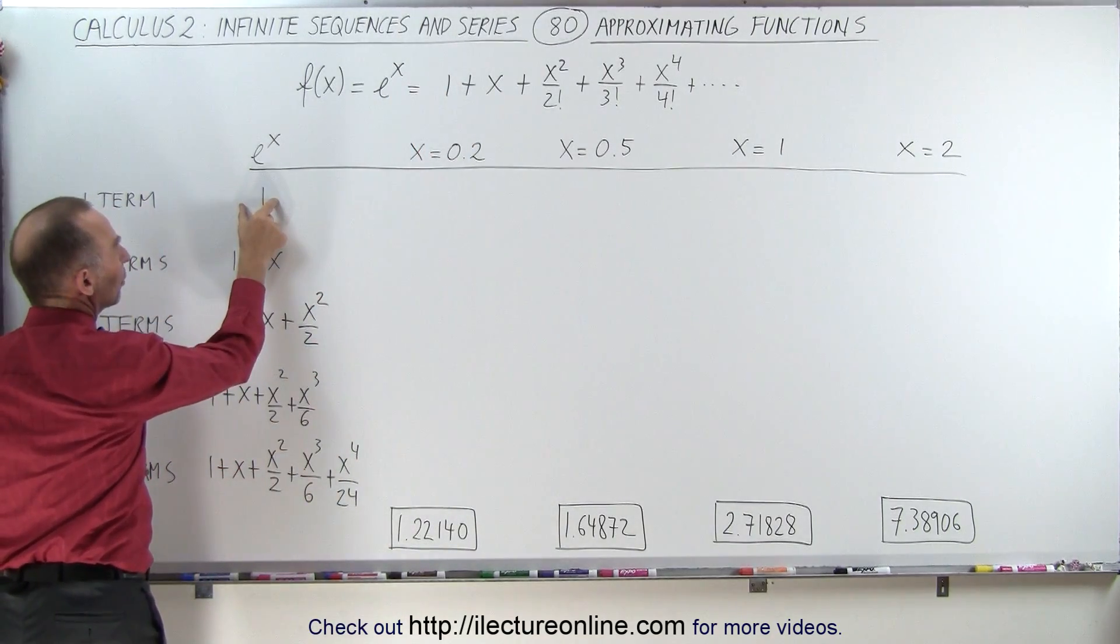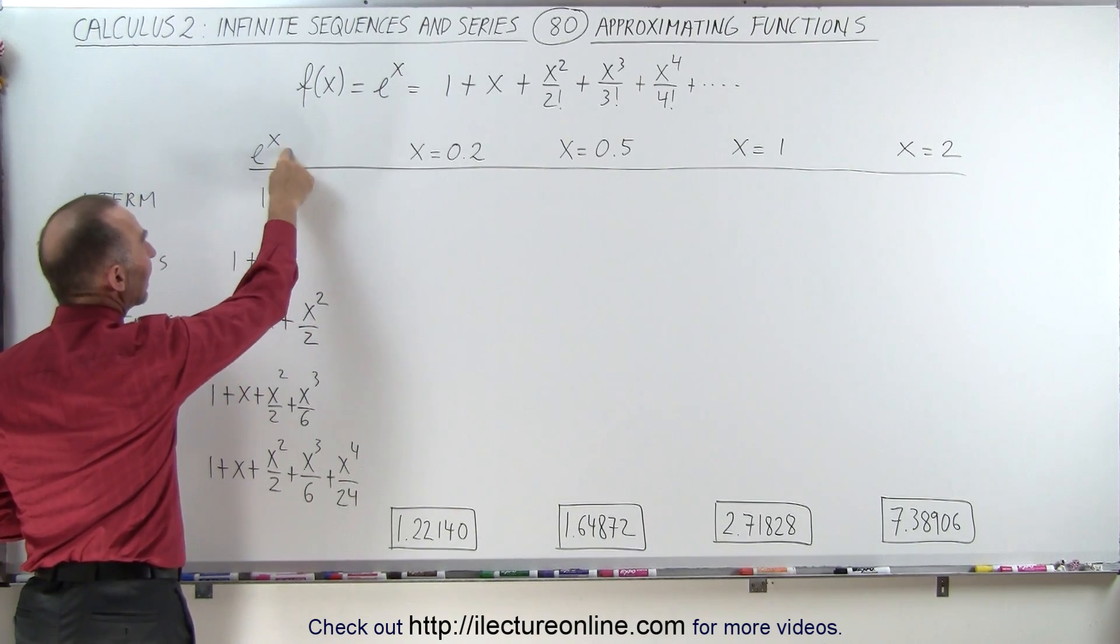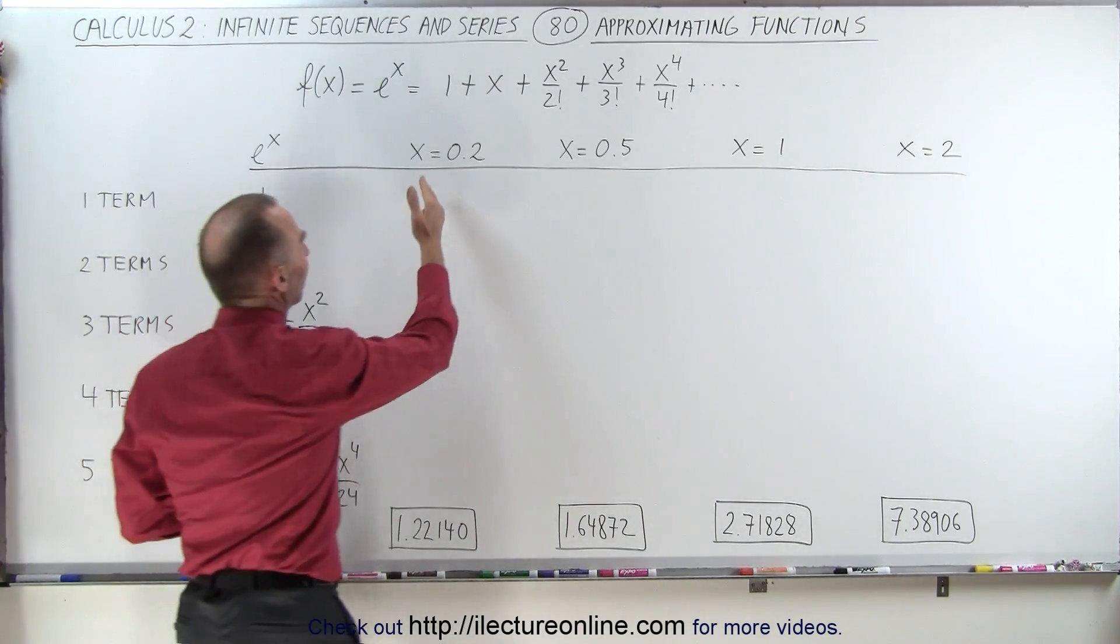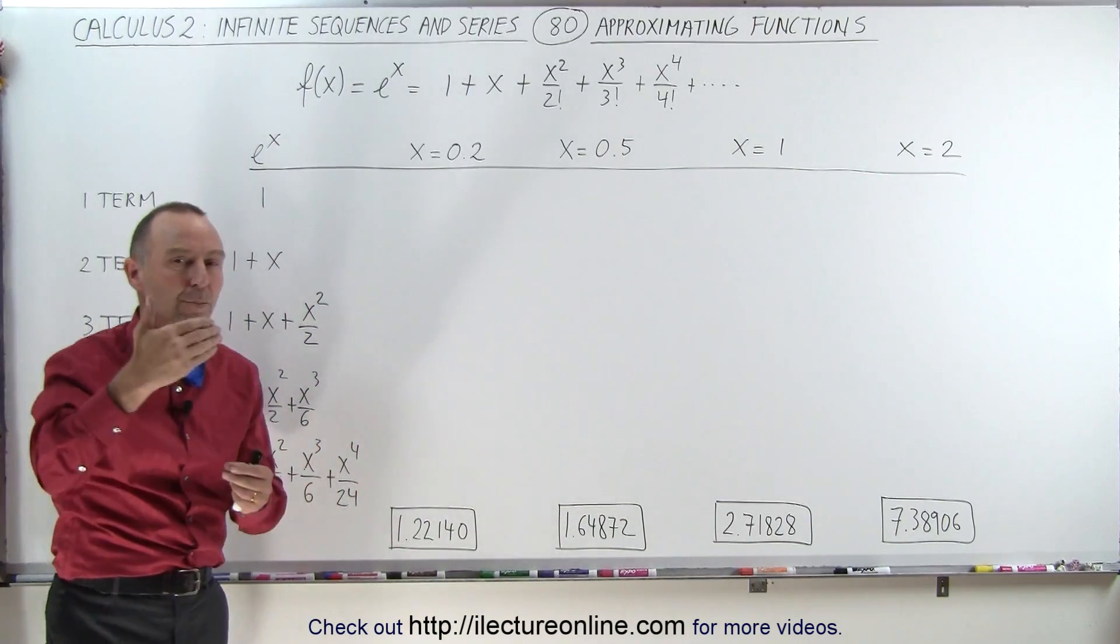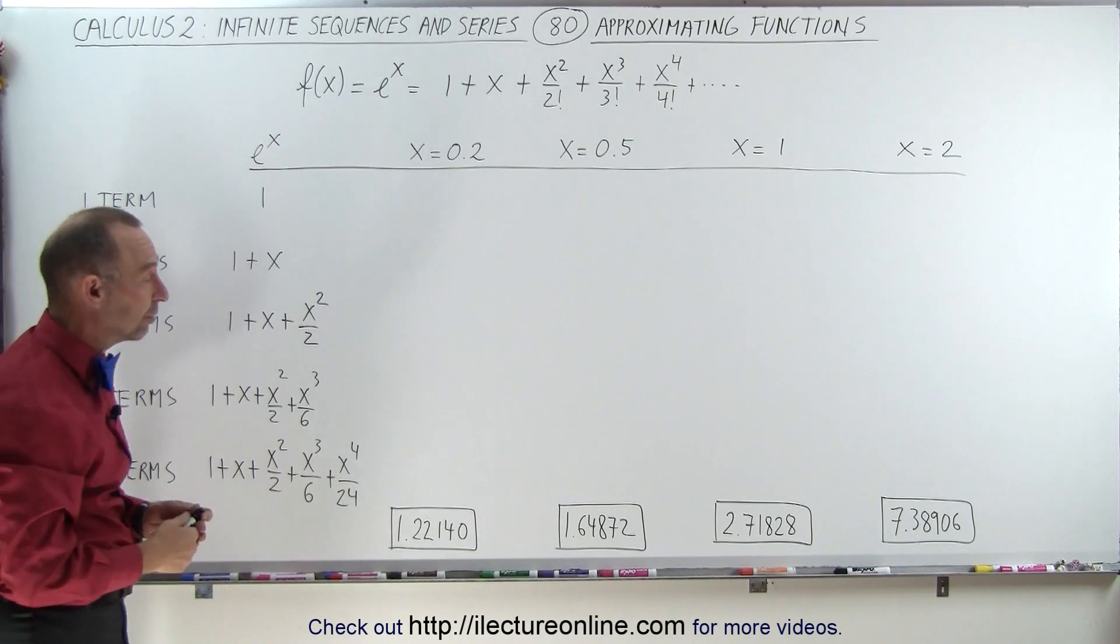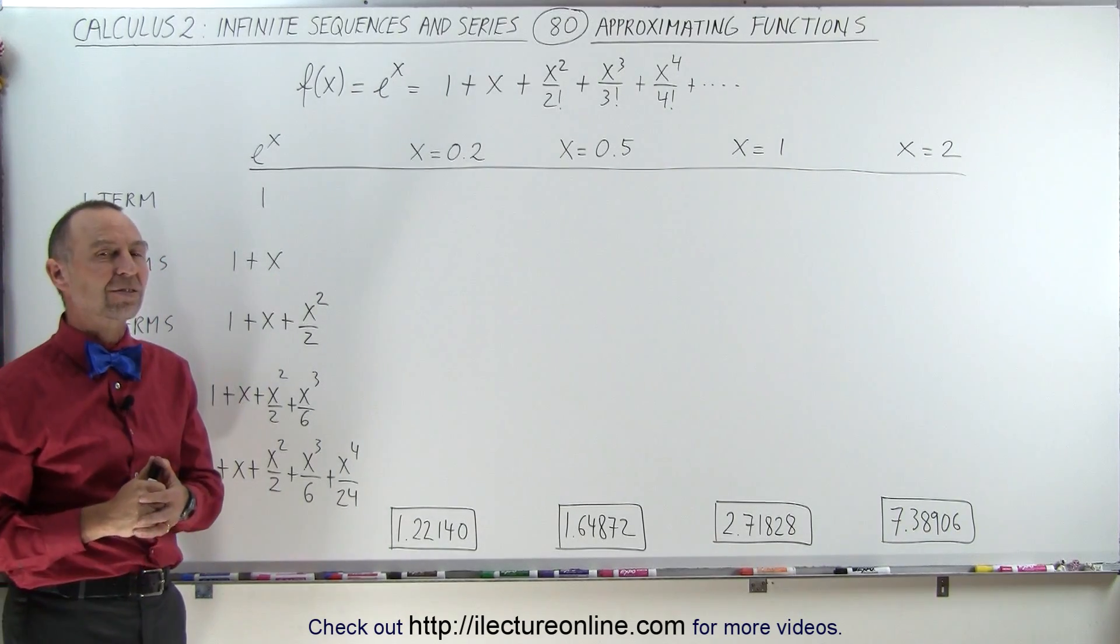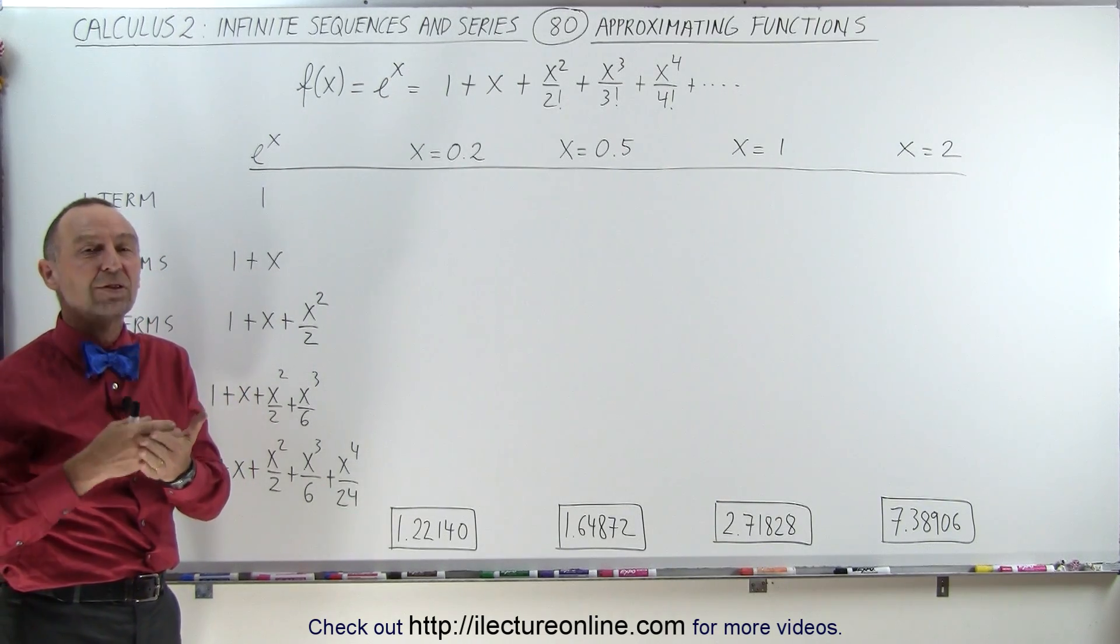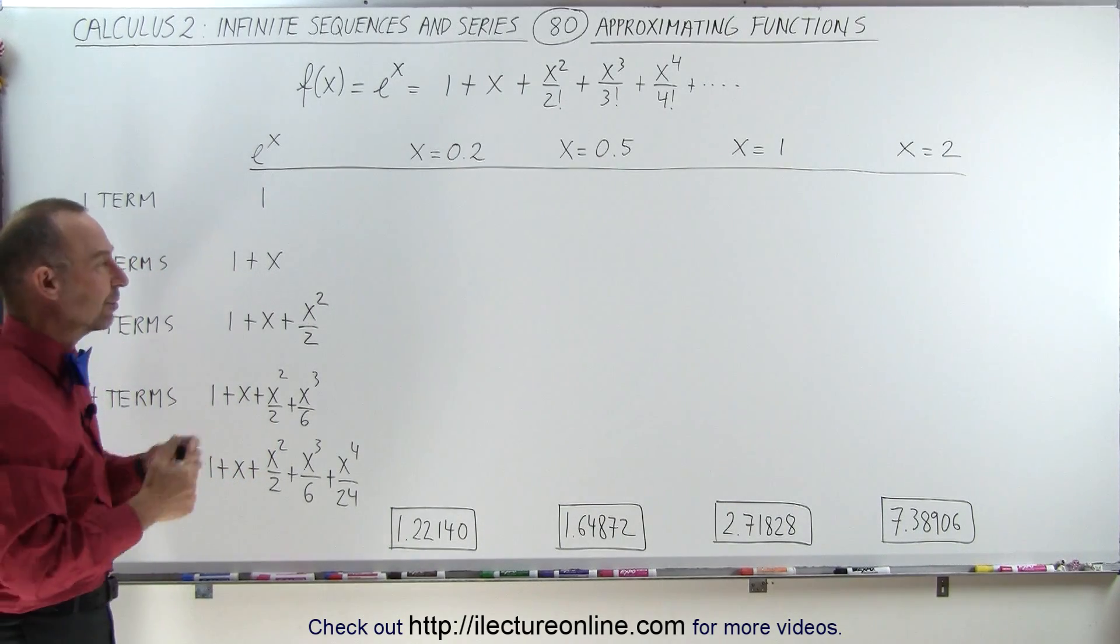That means the first term here will give us an accurate value for the Maclaurin series of e^x when we use only one term. But you can see that as the value for x diverges more and more from x equals 0, it will take more terms to get to an accurate value to five decimal places. And understanding that is very important in understanding how the Maclaurin series and Taylor series work, where we try to approximate values for functions.